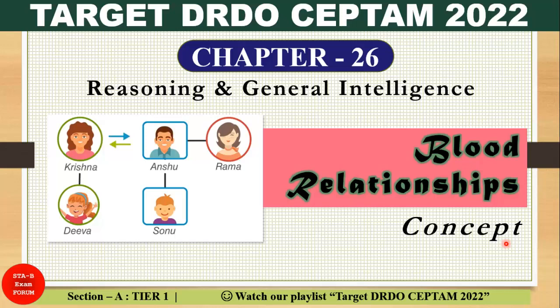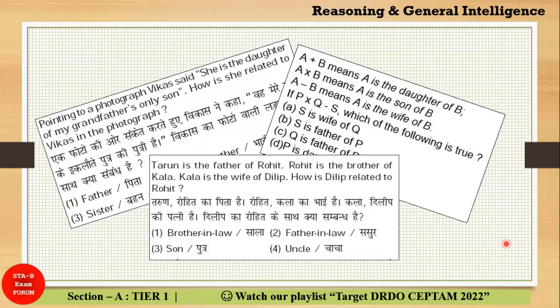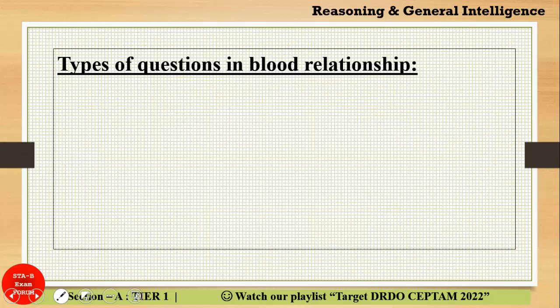Welcome to STB Exam Forum. We are covering Chapter 26, which is Blood Relationship. In this video we will cover only the concept and try to understand blood relationship with the help of some sample questions. You must have seen these types of questions in any competitive examination — someone pointing to a photograph, some relationship between persons, or symbols given which represent relationships. All these types of questions appear in the reasoning section.